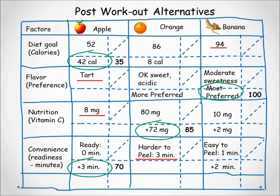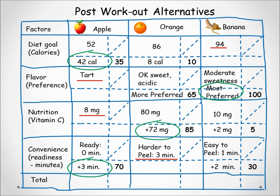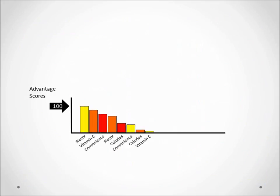We continue asking comparative questions — such as the advantage of two minutes saved peeling the banana versus eight fewer calories of the orange — until every advantage is scored. The underlined attribute is given a score of zero since there is no advantage for that alternative in that factor. Scoring reveals the preferences of stakeholders, not just numbers, so good judgment and open dialogue are essential. In our example, the orange came out with the highest score of 160, the banana second at 135, and the apple last at 105.